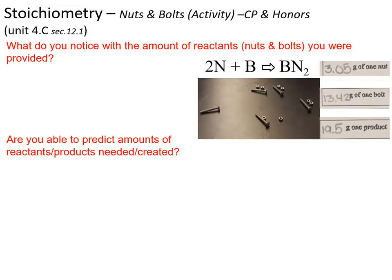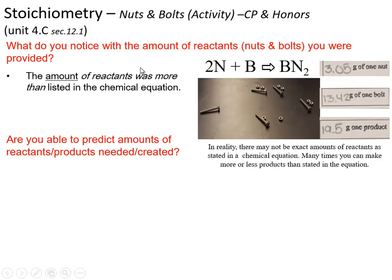Hello, this is Mr. O'Brien, and this is going to be part one of the lecture notes regarding stoichiometry. This part one is for both CP and honors classes. It's section 4.C, and this information can be found in chapter 12 of your textbook. So let's go ahead and get started about stoichiometry.